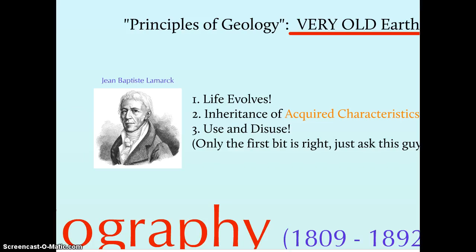Jean-Baptiste Lamarck was very important because he actually made the leap and said life does change — life has evolved over time to adapt to this changing world. He tried to explain the mechanism of evolution, saying it happens through acquired traits via use and disuse: organisms can change and shape their bodies and then pass on those changes to their offspring. But this doesn't work. We know that certain phenotypic changes have no corresponding change in the gametes and won't get passed on. For example, if a person develops skin cancer, that mutation occurred in the cells of the epidermis and is not going to be passed on.